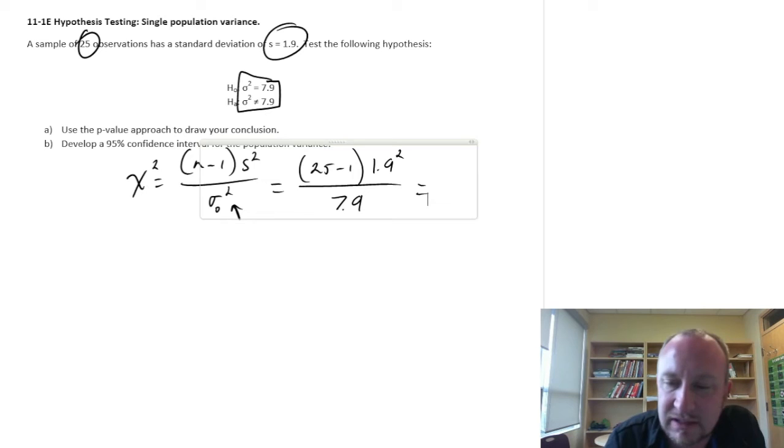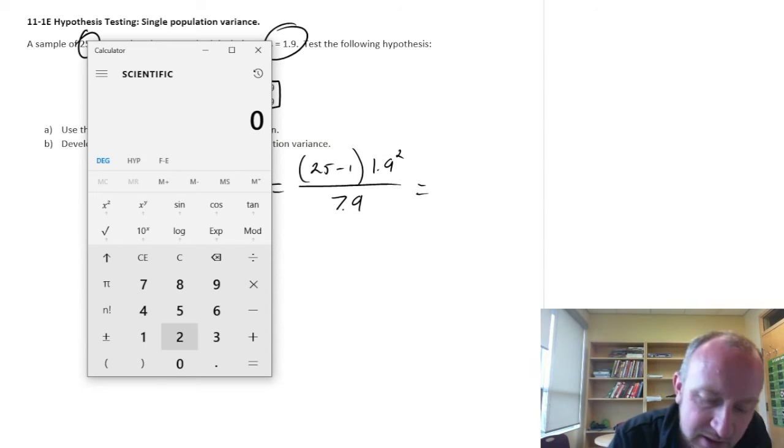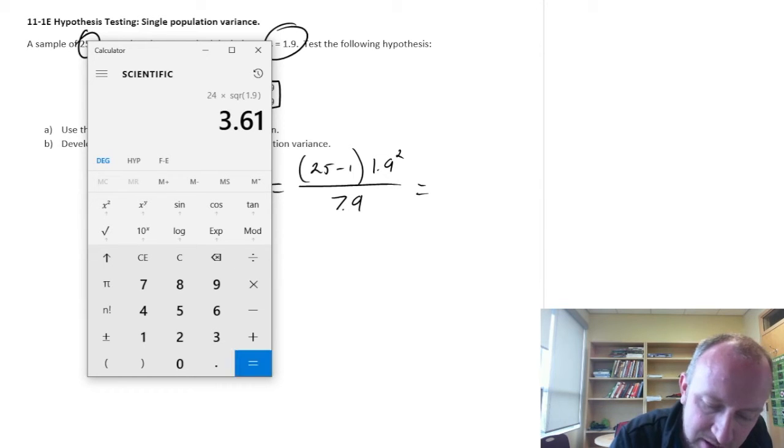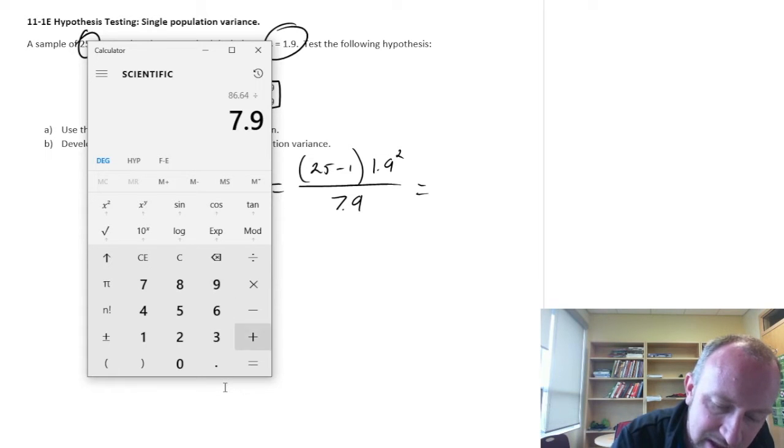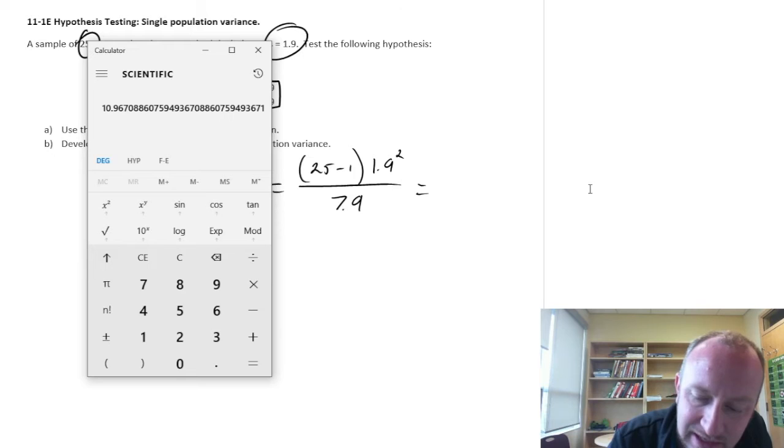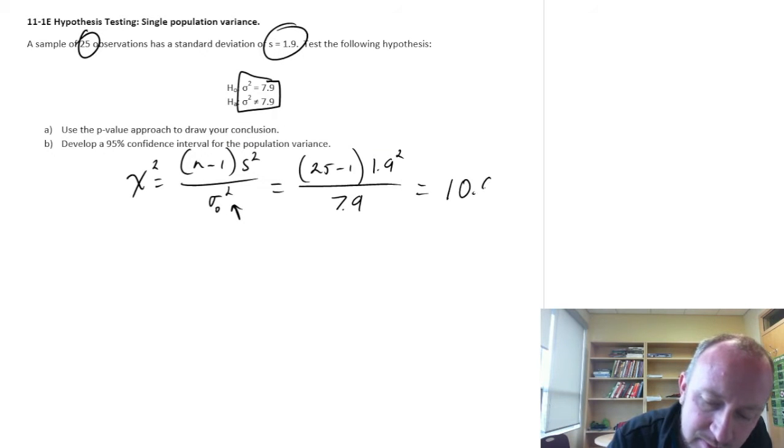So let's just plug these numbers into our calculator. 25 minus 1 is 24 times 1.9 squared equals divided by 7.9. And I have 10 point, let's round it to 10.97.